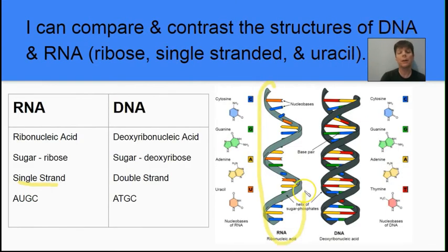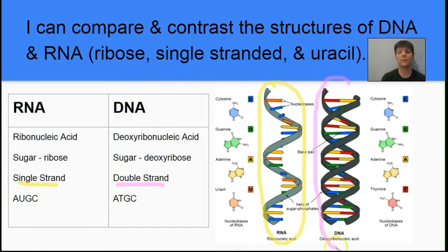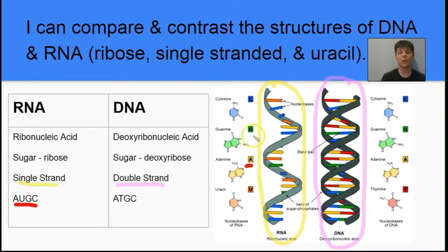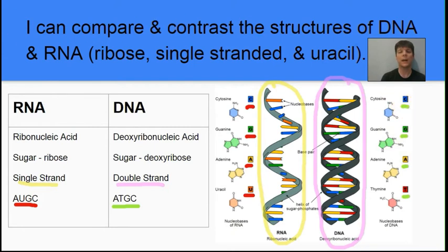Our next learning target is to compare and contrast the structure of DNA with the structure of RNA. RNA is a single-stranded molecule (circled in yellow on the left), while DNA is a double-stranded molecule (circled in pink). RNA contains the sugar ribose; DNA contains the sugar deoxyribose. RNA contains the bases A, U, G, and C, while DNA contains the bases A, T, G, and C. So the main differences are that RNA contains ribose, is single-stranded, and has the base uracil.